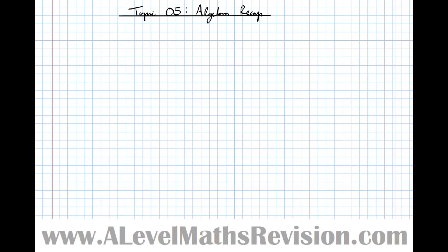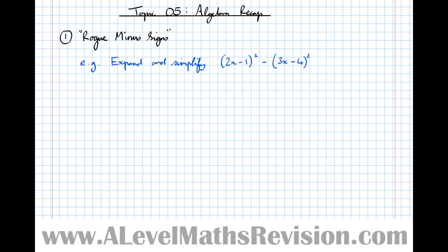In this Bridging the Gap tutorial I want to go through recapping algebra and go back to basics, because in my experience as a maths teacher it's the simple things that let students down. One of the things that all exam boards throw into their papers to catch students out are what I call rogue minus signs. So I'll give you an example: expand and simplify 2x minus 1 squared minus 3x minus 4 squared — this is what I'm referring to as a rogue minus sign.